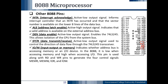The next pin is IO/M bar, pin number 28 — Input/Output and Memory. It indicates whether the address bus is accessing memory or an IO device. In the 8088, it is low when accessing memory and high when accessing input/output. This pin is used along with the RD and WR pins to generate four control signals: memory read, memory write, IO read, and IO write.